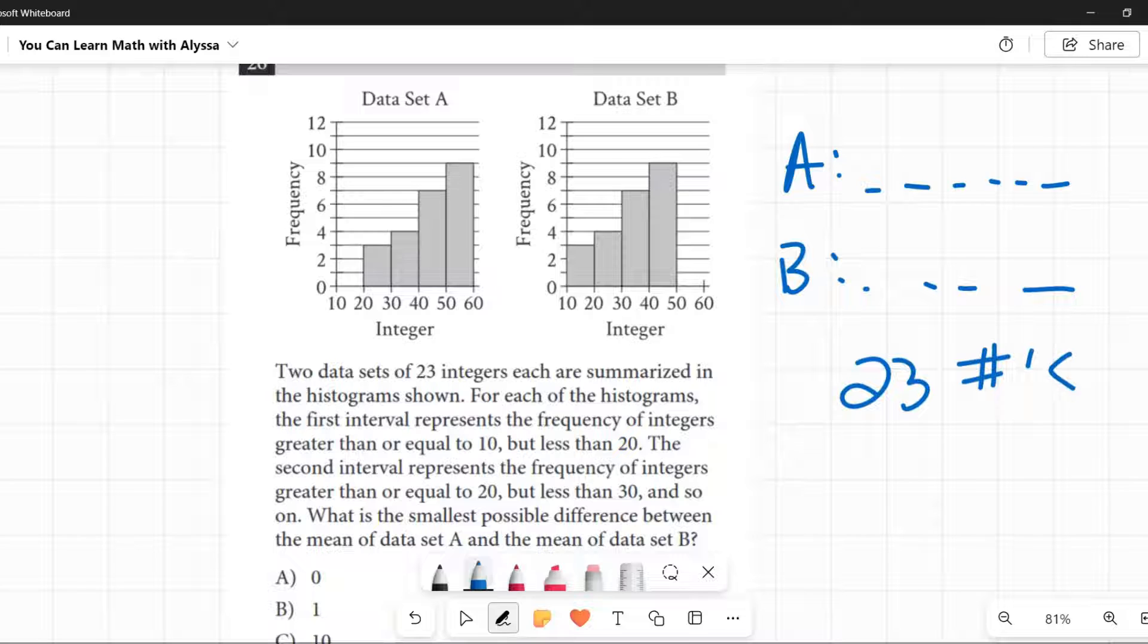And they're all integers, so there's no fractions, there's no decimals, they are just nice, round, lovely numbers. So they're summarizing, they're looking at these data sets and they're summarizing them.